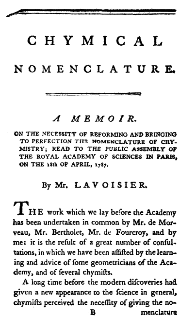Aims of chemical nomenclature. The primary function of chemical nomenclature is to ensure that a spoken or written chemical name leaves no ambiguity concerning which chemical compound the name refers to. Each chemical name should refer to a single substance. A less important aim is to ensure that each substance has a single name, although a limited number of alternative names is acceptable in some cases.